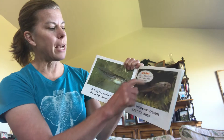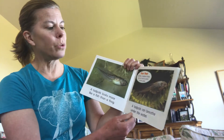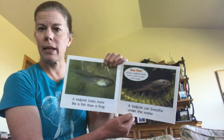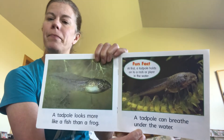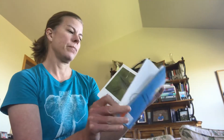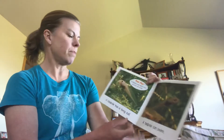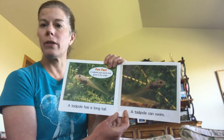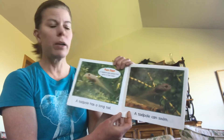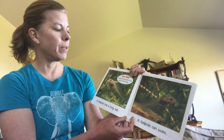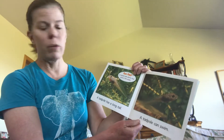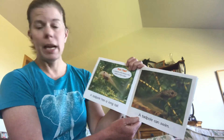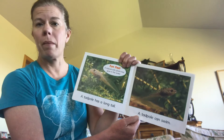At first, a tadpole holds onto a rock or a plant in the water. A tadpole has a long tail. A tadpole eats plants that grow in water. A tadpole can swim.